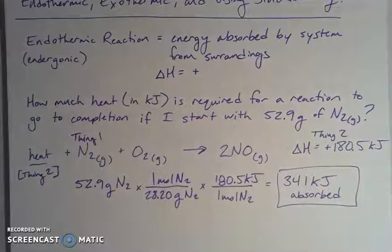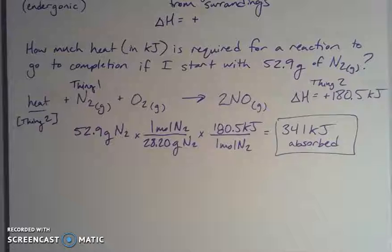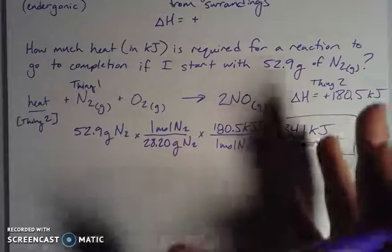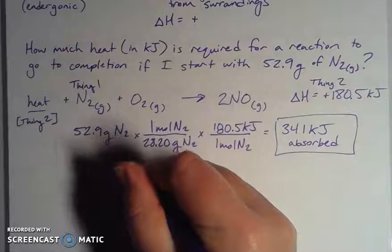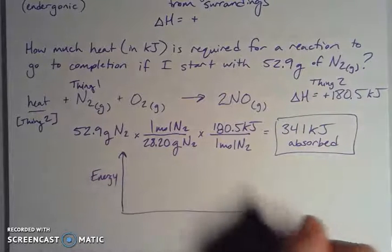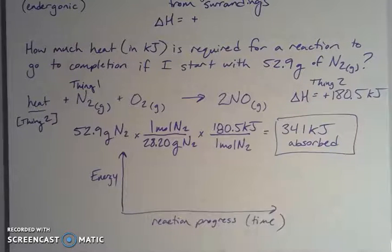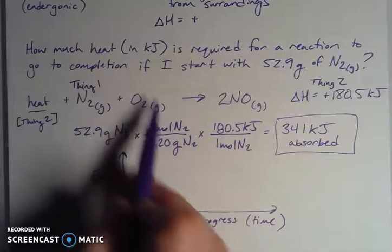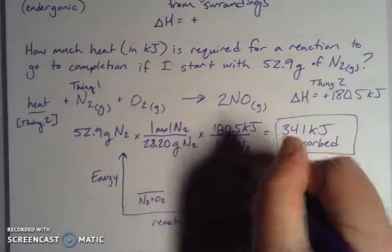So 341 kilojoules are required if I'm starting with 52.9 grams of nitrogen. Now, energy is a tricky conceptual thing to get your head around, so I like to think about it in terms of an energy diagram. On the y-axis I have energy increasing, and along the bottom I have reaction progress or time. As time goes on, we go from time zero to however long the reaction takes. My reactants — N₂ and O₂ — have a lower energy, while my products — 2NO₂ — have a higher energy.